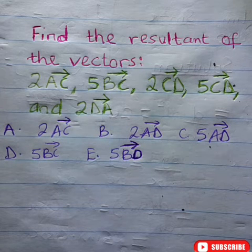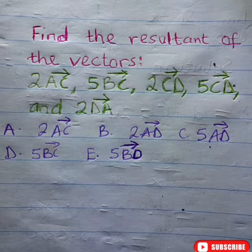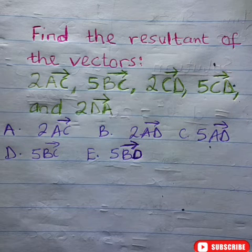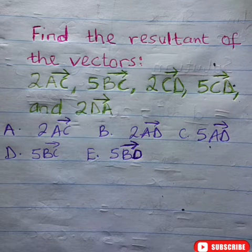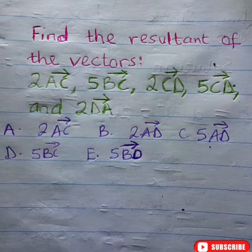Here are some of the options. A: 2AC, B: 2AD, C: 5AD, D: 5BC, E: 5BD.